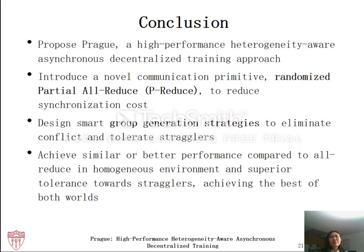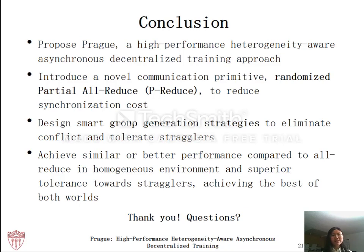In conclusion, we propose Prague, a high-performance heterogeneity-aware asynchronous decentralized training approach. We propose a novel communication primitive, randomized partial allreduce, that enables fast synchronization among groups of workers, and we design smart group generation strategies to further improve performance. Prague achieves similar or better performance compared to allreduce in a homogeneous environment and has high tolerance towards stragglers — achieving the best of both worlds. Thank you for listening, I'll be happy to take any questions.